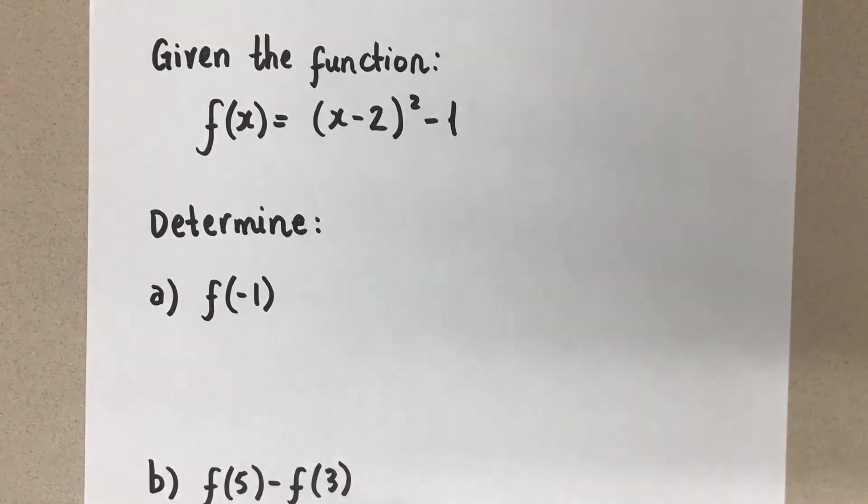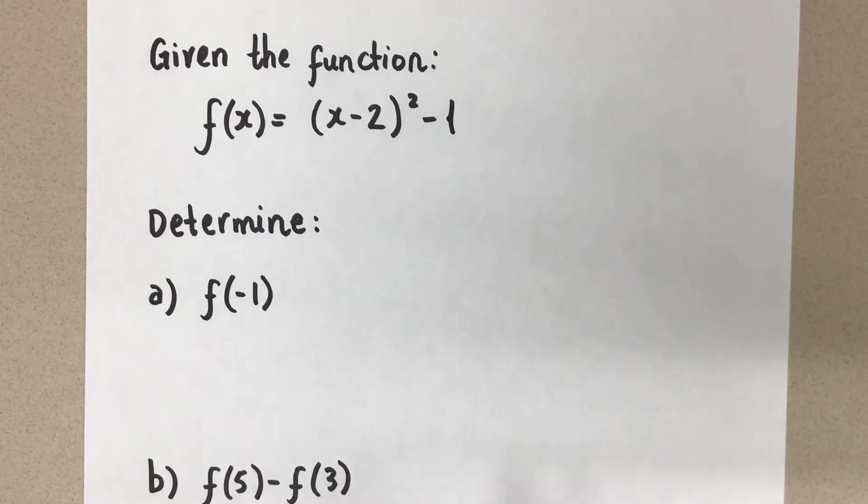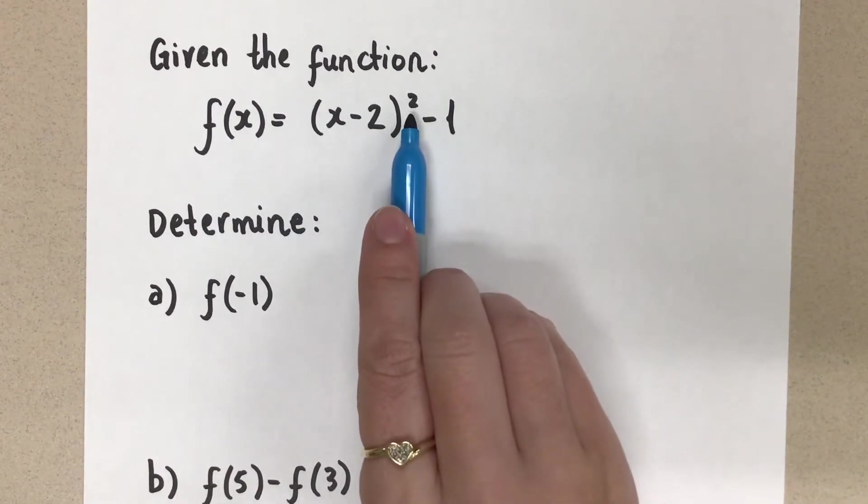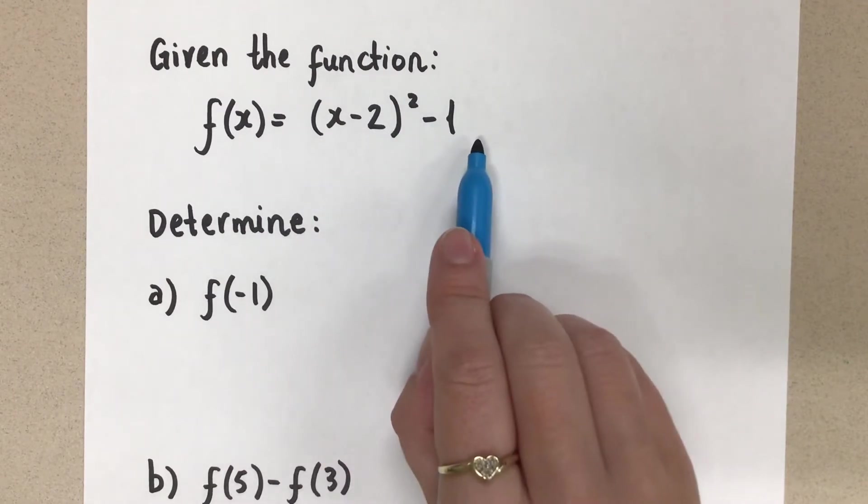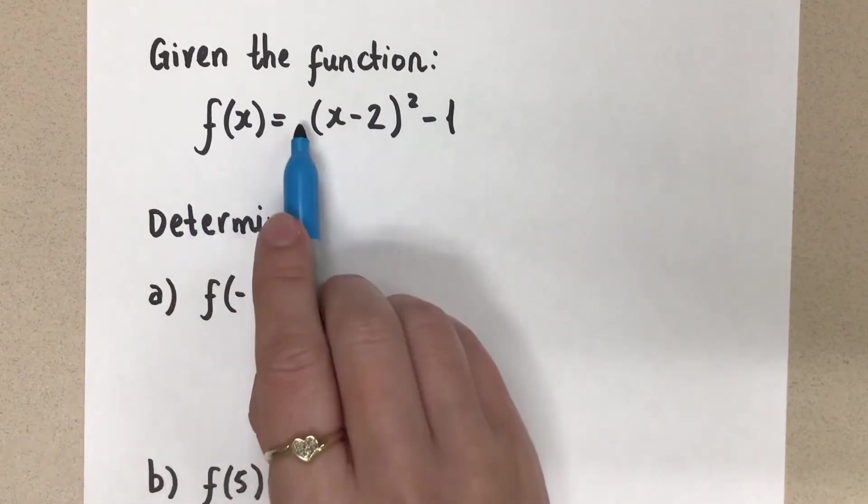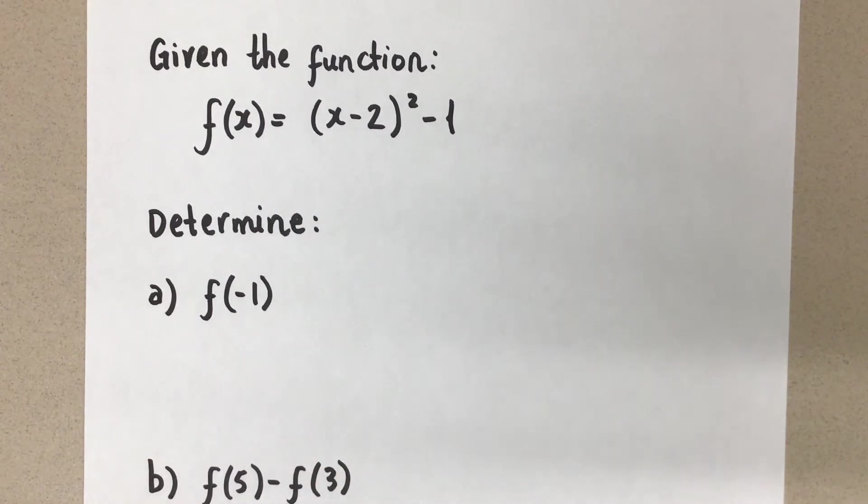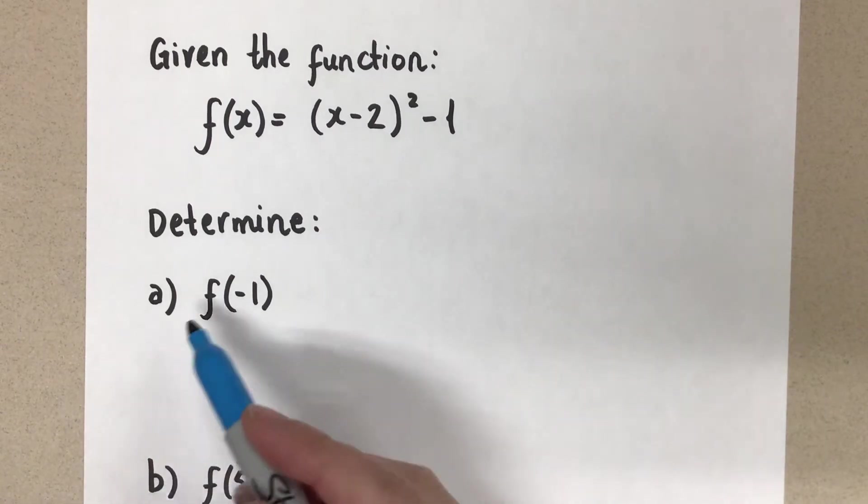So we have some practice questions here for practicing with function notation. Here's the equation. It is a parabola. This is a parabola, it's in vertex form. It has a positive a value so it's open up and the vertex is at positive 2, negative 1, just so we can always visualize the graph.